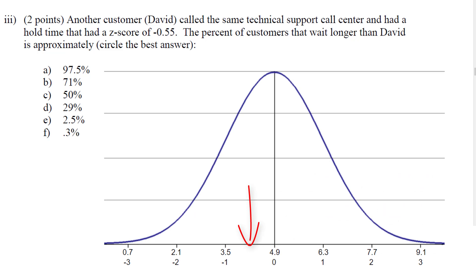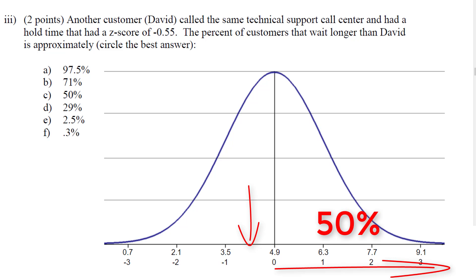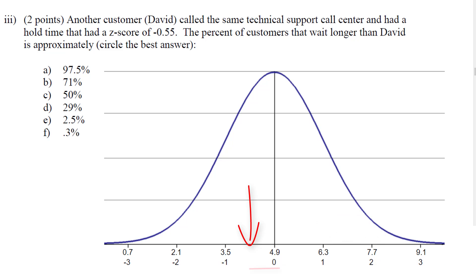You'll notice that David's z-score is between 0 and negative 1. The question asks: what percent of customers wait longer than David? When we see that David is at negative 0.55, we can try to figure out what area is shaded above that mark. Think about this — what percent of people wait longer than the mean? The answer would be 50%. But 50% is not our answer, because more customers are waiting longer than a z-score of negative 0.55.